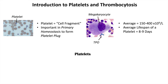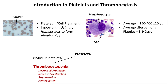When looking at platelet counts, if we have less than 150 × 10⁹ per liter, we have thrombocytopenia — too little platelets. The causes include decreased production, increased destruction, sequestration, and hemodilution. But this lesson focuses on having too many platelets: more than 400 × 10⁹ platelets per liter of blood is the diagnosis of thrombocytosis.